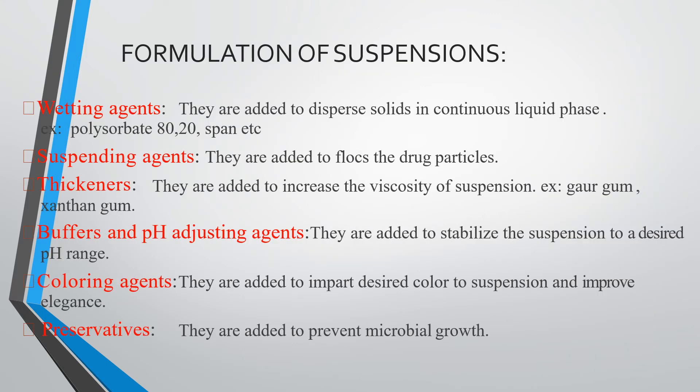The pharmaceutical formulation requirements for suspension include wetting agents, suspending agents, thickening agents, buffering agents, preservatives, and coloring agents. Wetting agents are added to disperse the solid into the continuous liquid phase; examples include polysorbate 20 to 80.